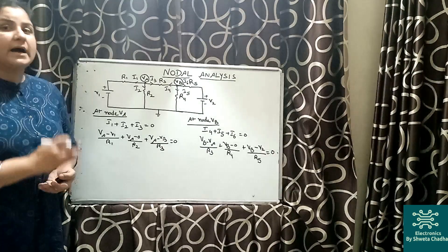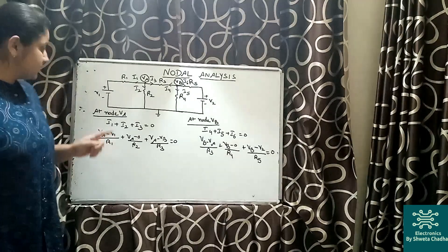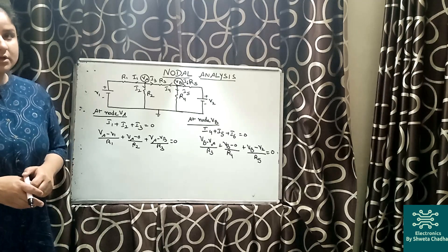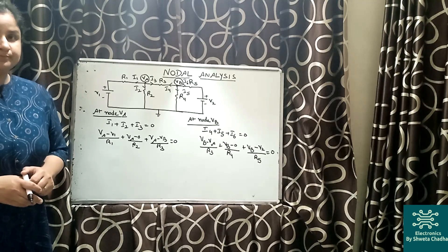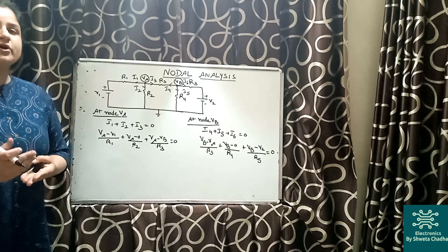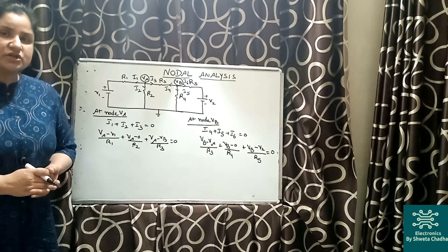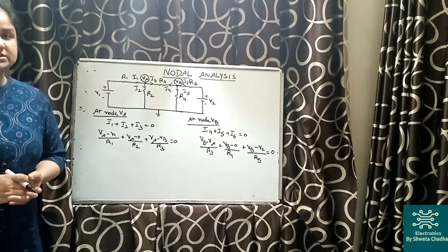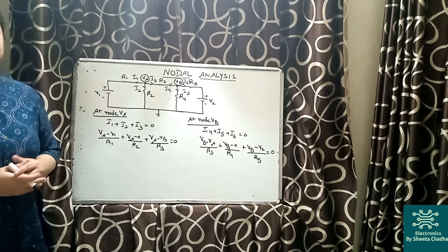Let us take the first case, node VA. First of all, what is a node and a junction? A node is where two or more than two branches are joining with each other, whereas a junction is a point where three or more than three branches are connected. That means all junctions can also be treated as nodes.